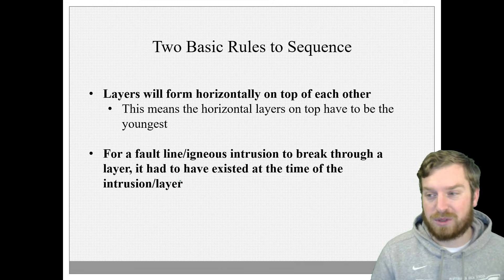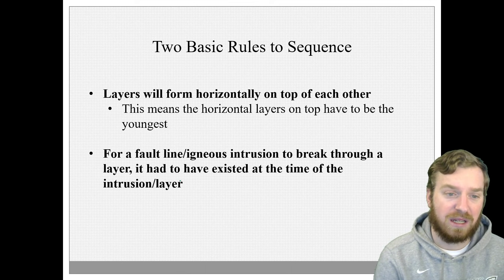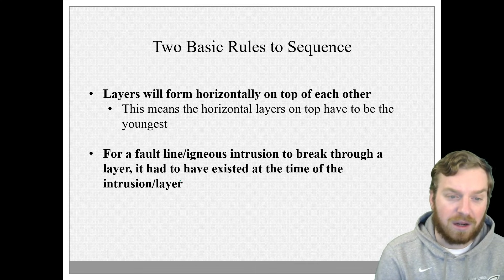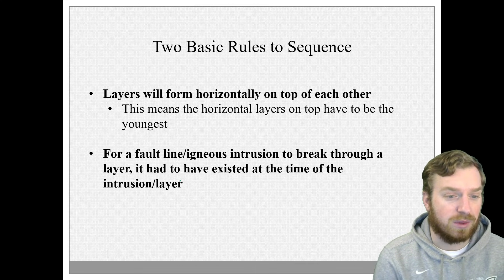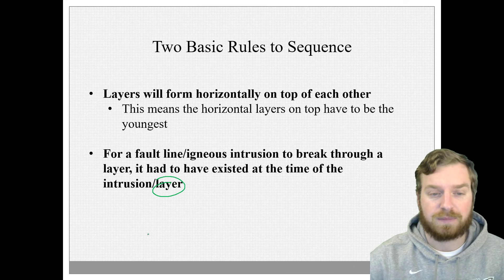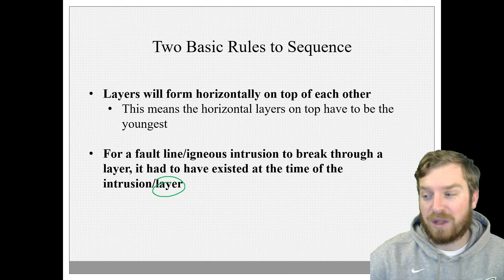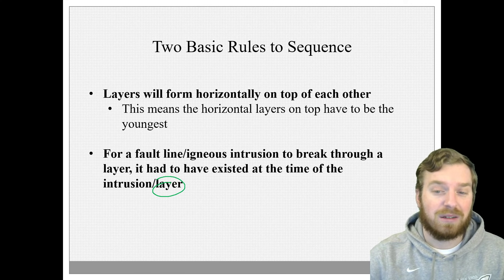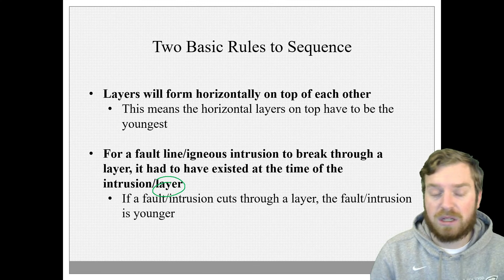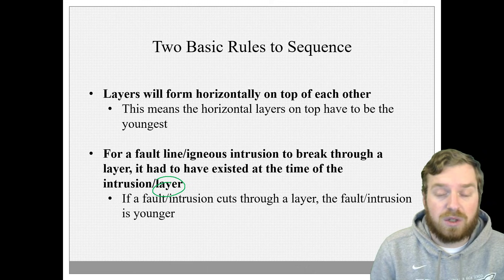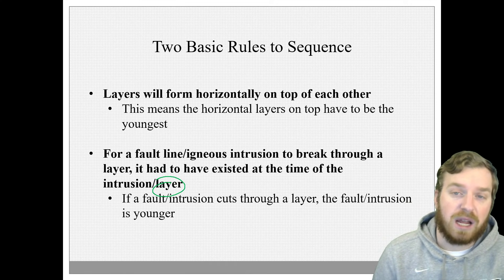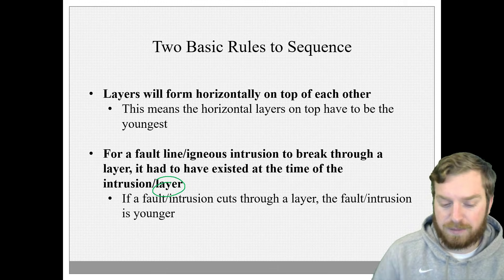And the second thing, and these rules are fairly basic and give you a really good idea, is for a fault or an igneous intrusion to break through a rock layer, well, that rock layer had to already be there at the time of the igneous intrusion or the fault line. So if we know that an igneous intrusion or a fault line had to break through a rock layer that was already there, then we could say that the fault line or the igneous intrusion is younger. So if a fault line cuts through a rock layer, then the fault line is younger than the actual rock layer.